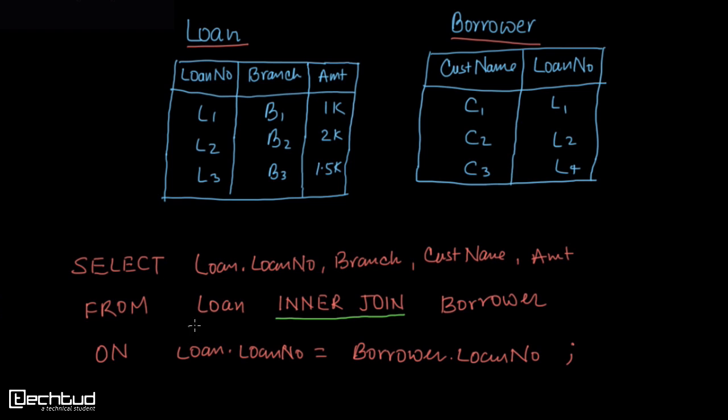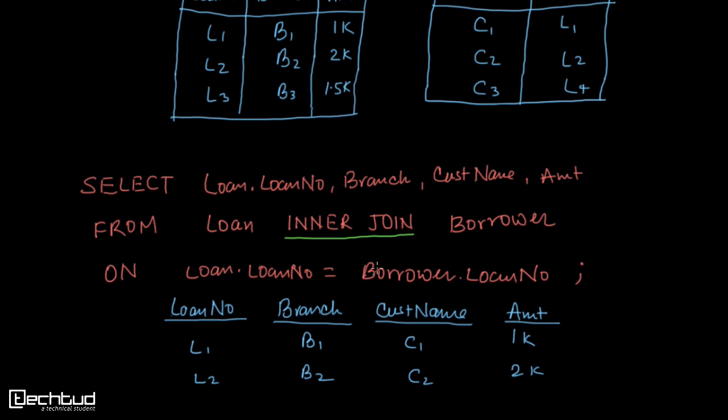This will perform an inner join on these two tables with the condition Loan.LoanNo equals Borrower.LoanNo. The output would be something like this. This is the output of the inner join performed by this query.